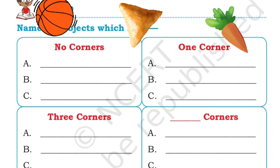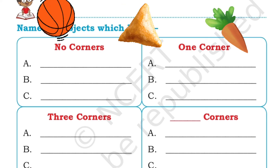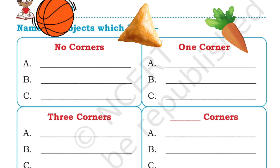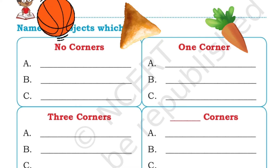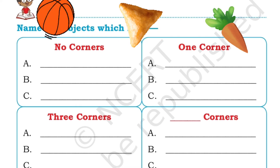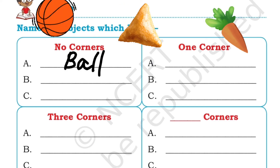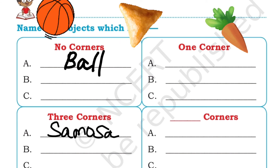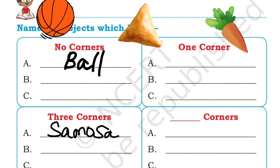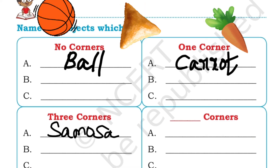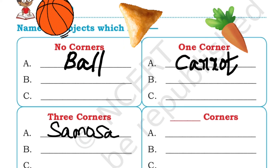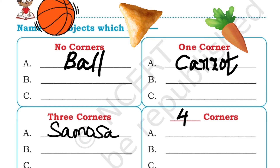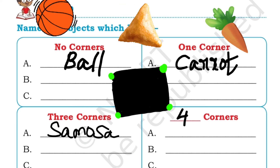We have three objects: a ball, a samosa and a carrot. Let us match the number of corners. Which of these has no corners? Zero corners — ball, a sphere shape. Next, samosa is in a triangular shape which has three corners. The last one is carrot which is in a cone shape — we already know cone has only one corner. And which object will have four corners? This is a whiteboard or blackboard which has four corners.